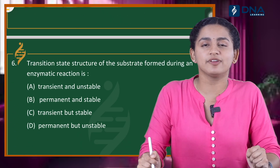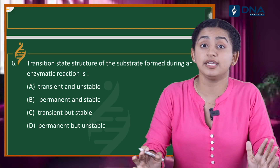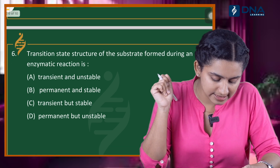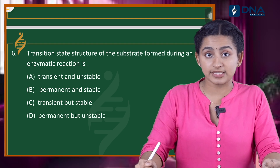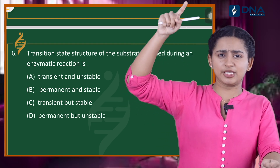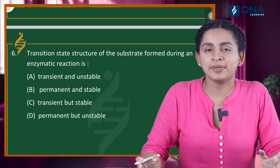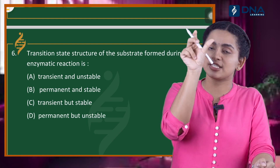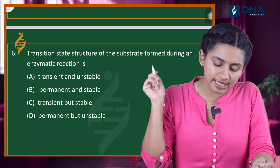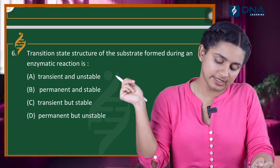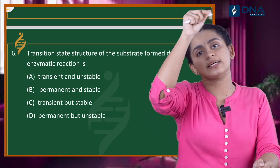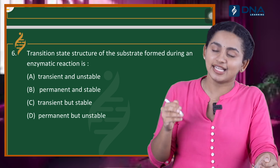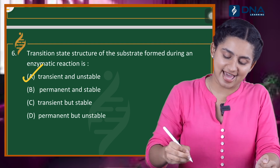Question number 6: Transition state structure of the substrate formed during an enzymatic reaction. Biomolecules questions are easy but very important. The options are: transient and unstable; permanent and stable; transient but stable; permanent but unstable. The transition state is transient, not permanent, and unstable. So the correct option is Option A, transient and unstable.